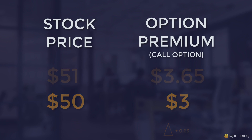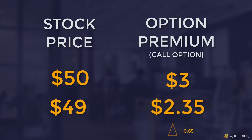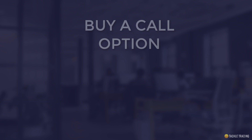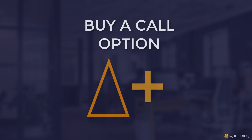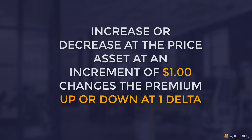Conversely, if the stock price were to drop $1, the option premium would go down $0.65 — about $0.65 on the dollar. That doesn't account for the Gamma, which can change the Delta or that rate of change, but ballpark, that's how a Delta works. When you buy a call option you have a positive Delta, and an increase or decrease in the asset price by $1 will change the premium up or down by about one Delta.